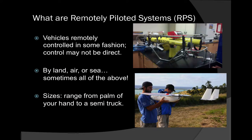Remotely piloted systems are systems that you control remotely — something you're not actually in. These systems aren't always radio controlled or directly controlled. Sometimes they're autonomous, meaning they pilot themselves. But you also have control in that you can say, I want you to stay in this area, or fly in circles over here. There's some sort of control even though it may not be direct. These systems exist in the air, on the ground, on the surface of the ocean, and under the surface of the ocean.